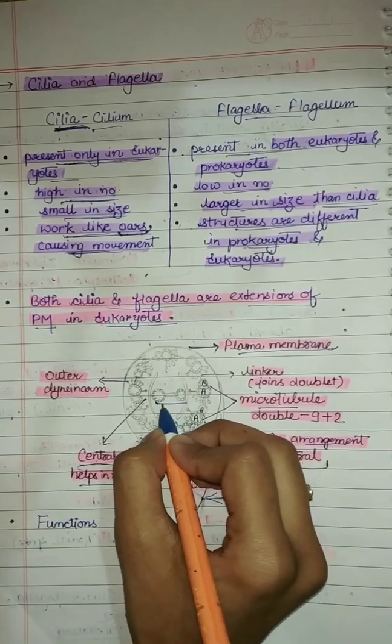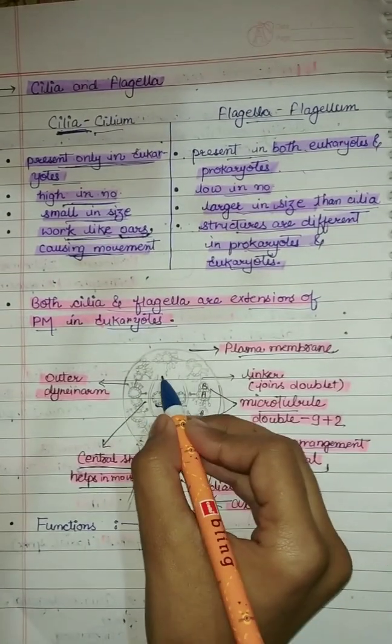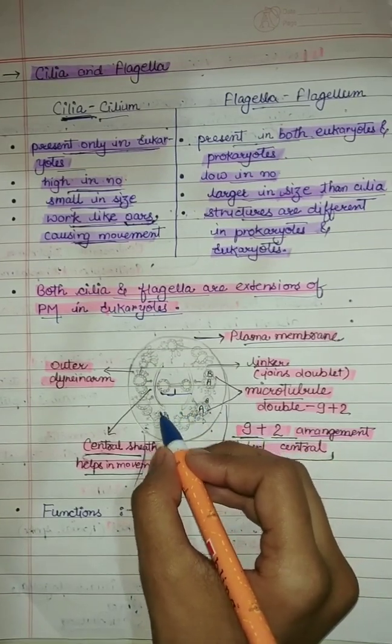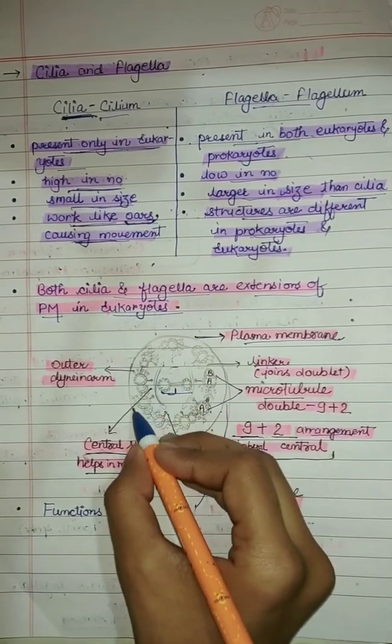The central tubules are connected by a bridge-like structure and enclosed by a central sheath. The central sheath is connected to one tubule of each peripheral doublet by radial spokes, meaning there are 9 radial spokes.